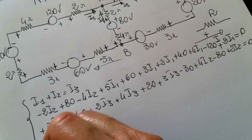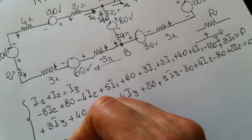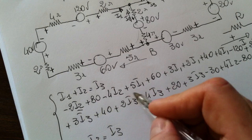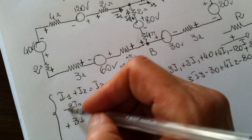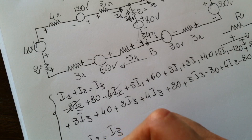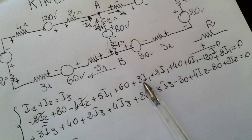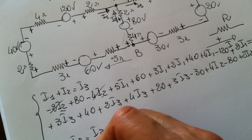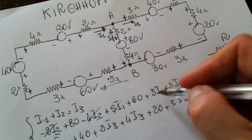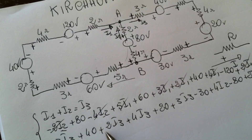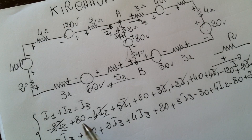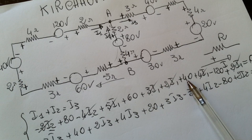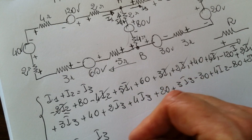Now we have to sum the similar terms. The first equation stays the same. For the second equation, we work out the I2 terms: minus 2 minus 4 gives minus 6·I2. The I1 terms: plus 5, plus 3, plus 2, plus 4, plus 2, giving plus 16·I1. For the generator values: plus 80, plus 60, then plus 40, then minus 120, then plus 60, equals zero.